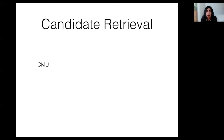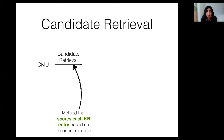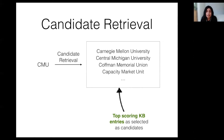Before jumping into the method, let's take a look at the candidate retrieval process. The input is a pre-extracted named entity mention from a sentence or a document. The candidate retrieval process includes scoring the input mention with respect to each entry in the knowledge base, and the top scoring entries are selected as candidates for the downstream disambiguation method. Since we're focusing on cross-lingual entity linking in this talk, the candidate retrieval method will score the knowledge base entries with respect to input mentions that are from some other language.